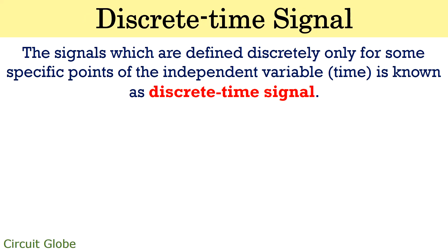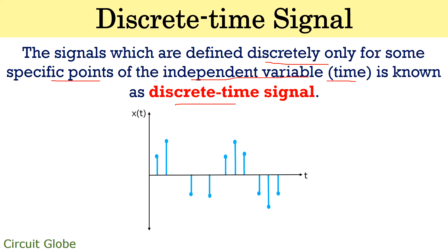A discrete time signal is defined as the type of signal which is discretely defined only for some specific set of points of the independent variable, that is time. The figure shown here clearly represents that the function x(t) is defined only for some specific set of points in the time domain. The pinheads define the sample values at different time instants. You must not conclude that for the time between two samples the value of x(t) is 0 — it may be 0, but since samples are taken only at discrete time instants, we cannot say this with certainty. This is different from a continuous time signal, where discontinuities are related to attaining a 0 value. In discrete time, there is no information about whether the value is 0 or not, as those time instants are undefined.